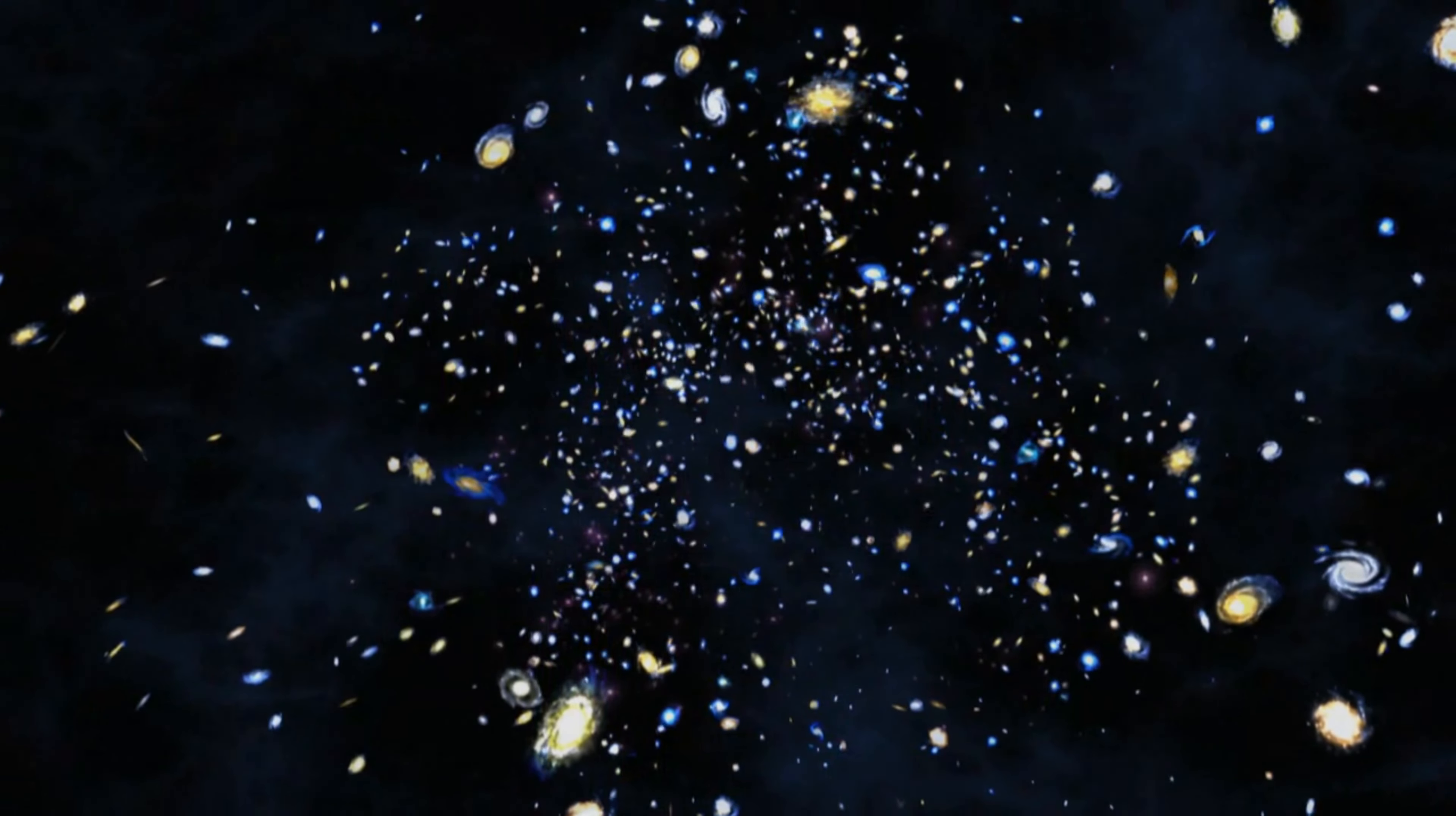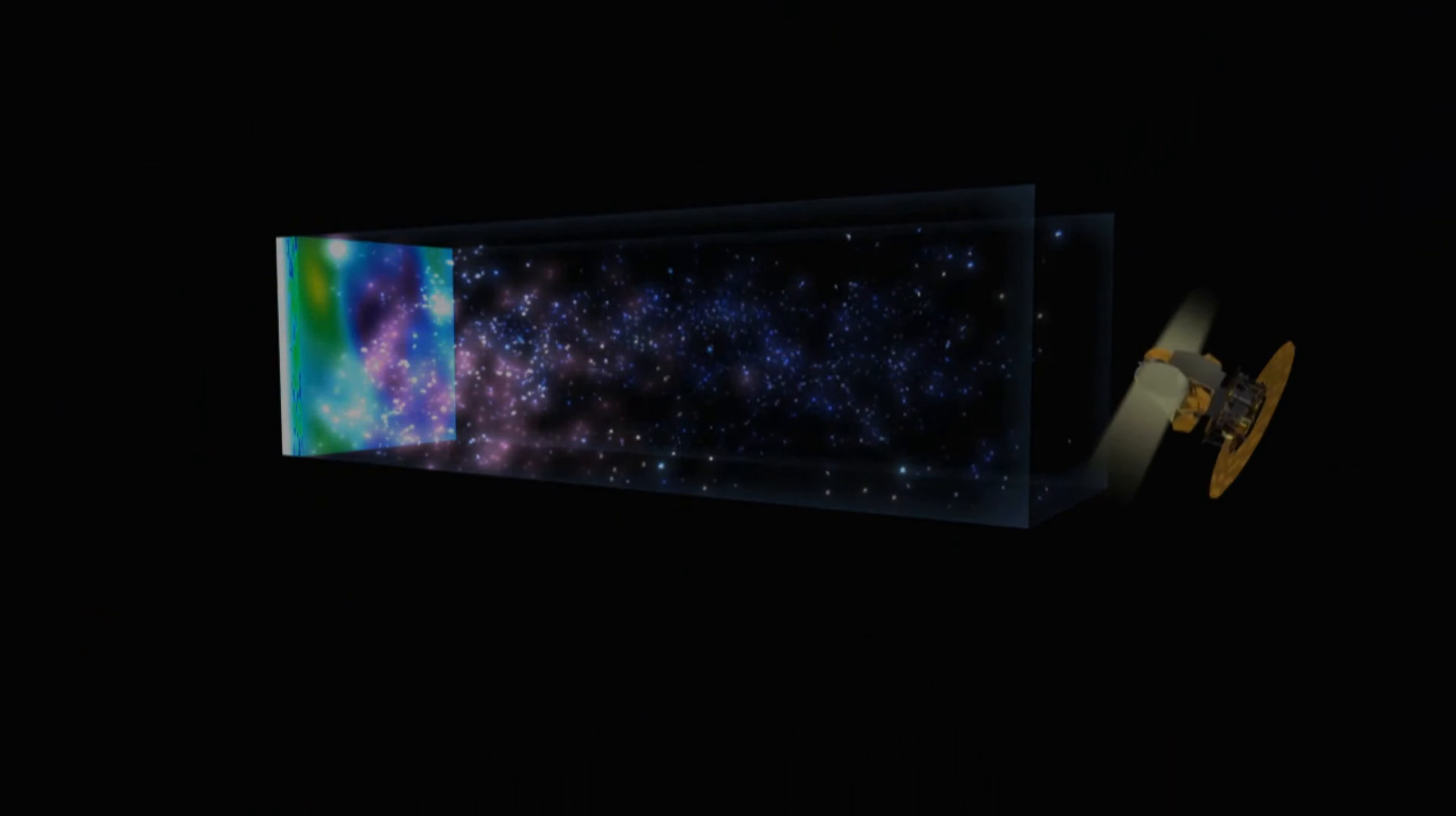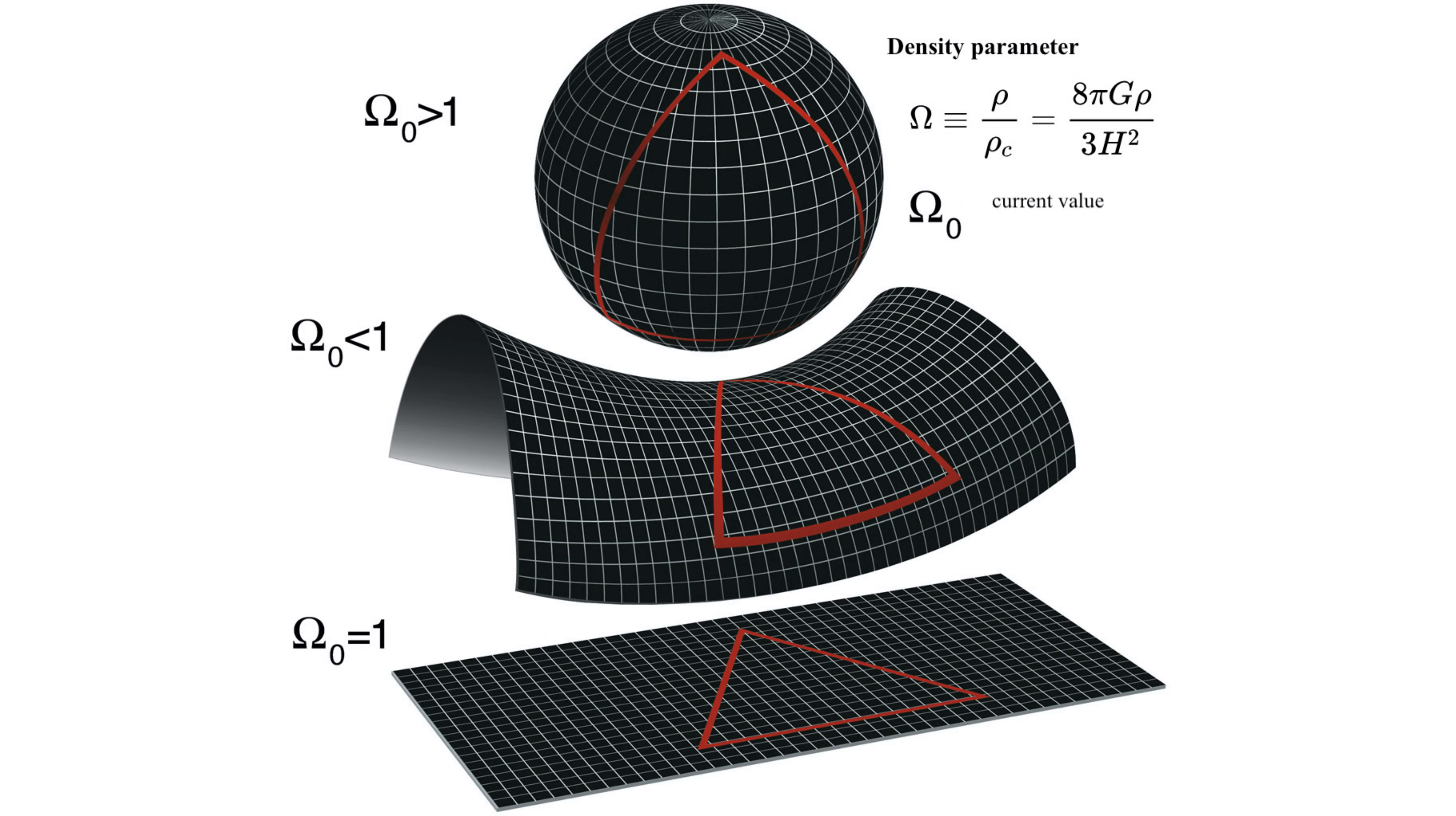Based on current evidence, like the cosmic microwave background, the observable universe appears to be very flat on large scales. This means that on a very large scale, the geometry of three-dimensional space resembles a Euclidean plane rather than a positively curved space like a sphere or negatively curved space like a saddle.